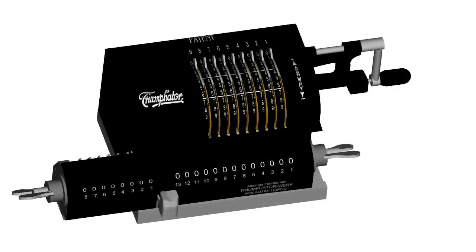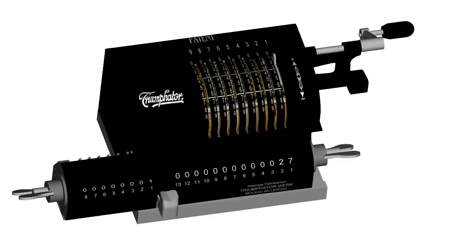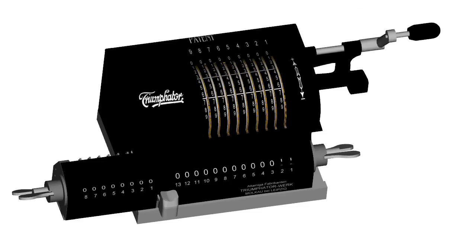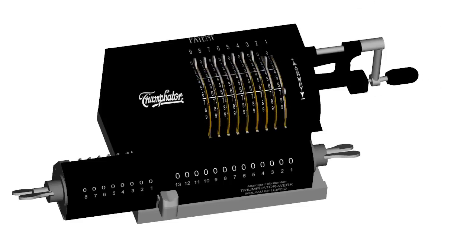To perform an arithmetic operation, the user enters a number, for example 27, using the levers on the setting ring. Rotating the handle clockwise causes the number encoded by the setting rings to be added to the accumulator, while rotating counterclockwise results in subtracting the number from the accumulator.